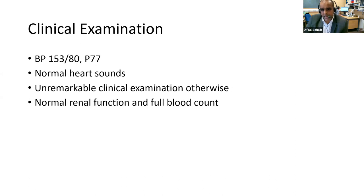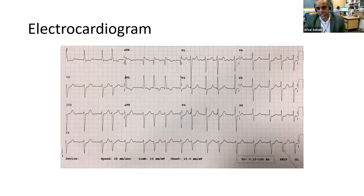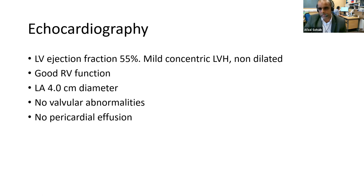On clinical examination, his blood pressure is a bit up at 153 on 80, heart sounds normal, nothing else to find. He's had some bloods done — completely normal renal function and full blood count. His ECG shows AF with a heart rate of around 80 beats per minute. An echo via the community service shows a good ejection fraction, a bit of concentric LVH with the hypertension, left atrium is 4 cm — so not dilated — no valve problems and no pericardial effusion.